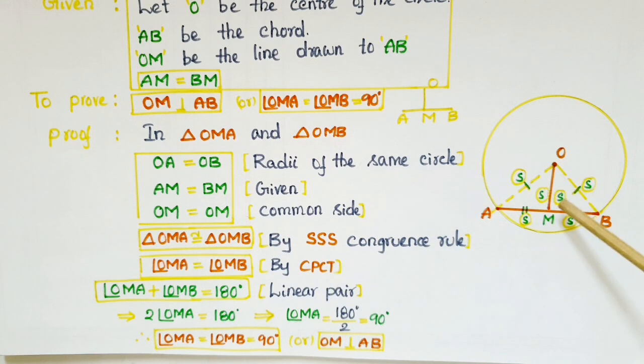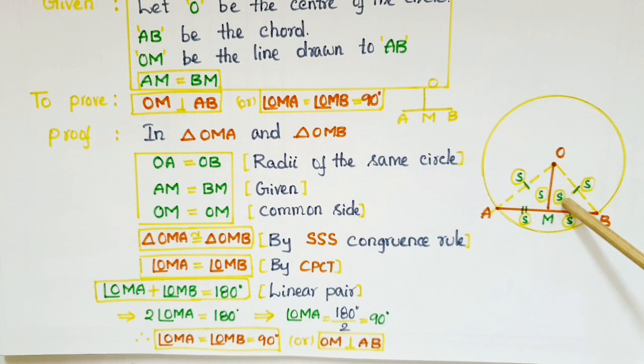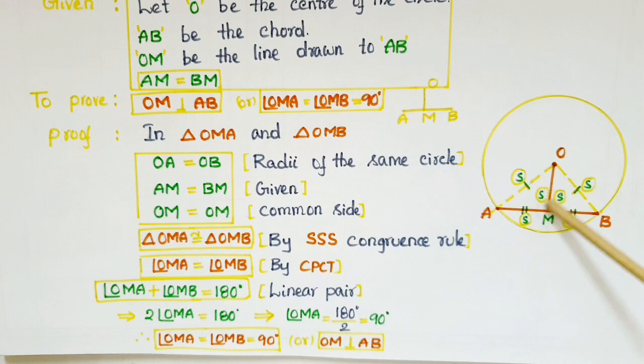Once these two triangles are congruent, we can equal the corresponding parts of these two triangles. So angle OMA is equal to angle OMB. These two angles are equal by CPCT and if you observe these two angles form a linear pair here.